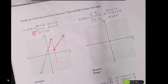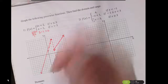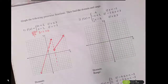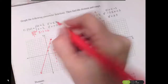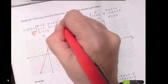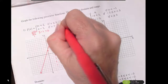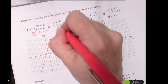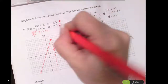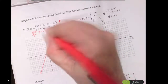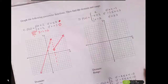For number 1, I went ahead and created my boundary line at x equals 3. Everything to the left got a closed circle and was the graph of this function. Everything to the right got an open circle and was the graph of x minus 1.